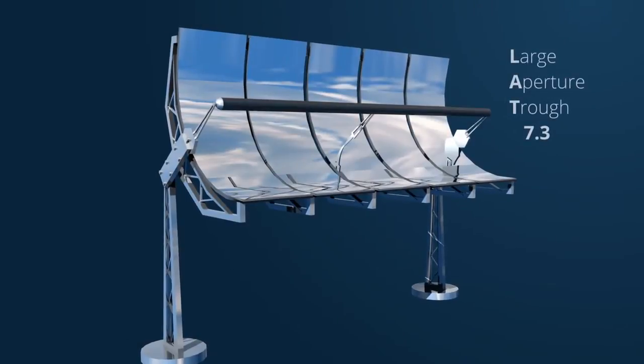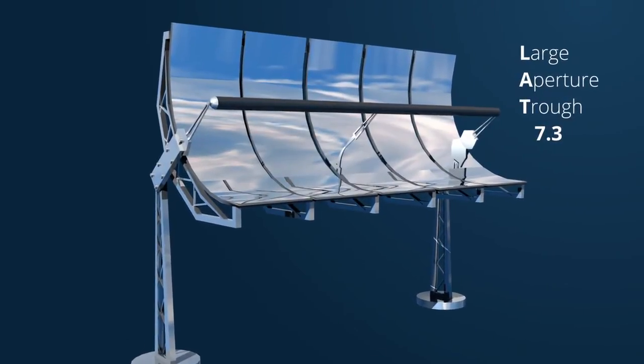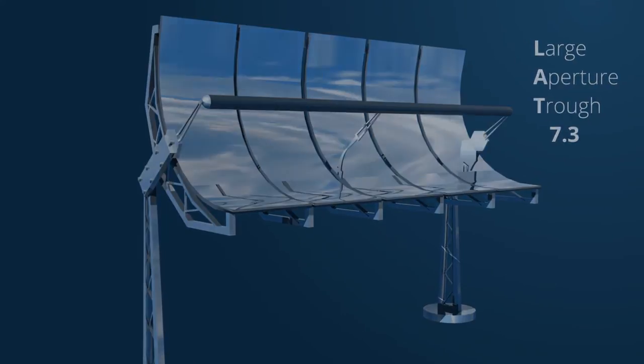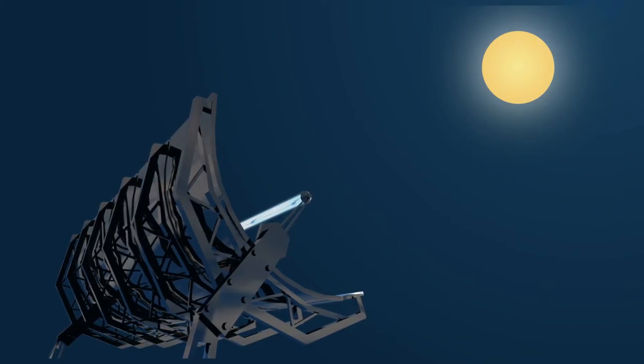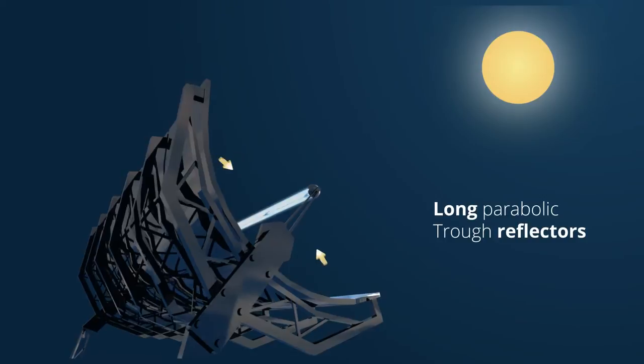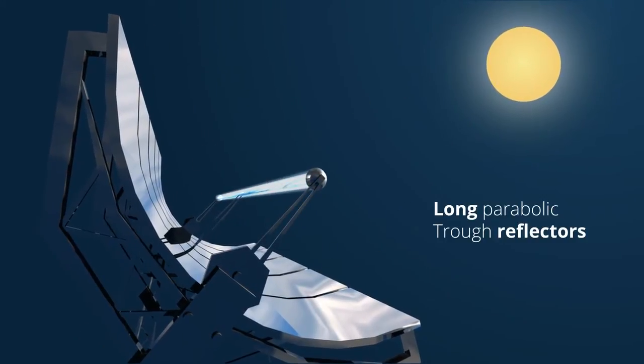The LAT 7.3 is a complete parabolic trough solar collector and tracking system. Its heat collectors are made up of long parabolic trough reflectors, each with a heat collecting tube.